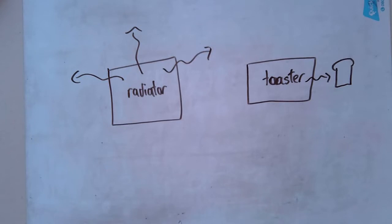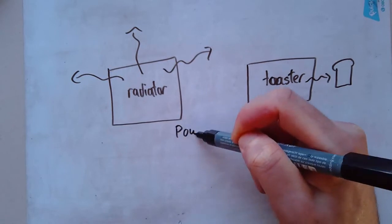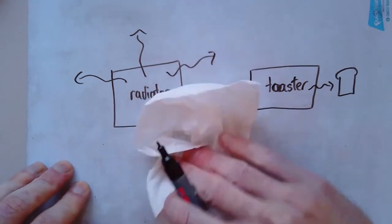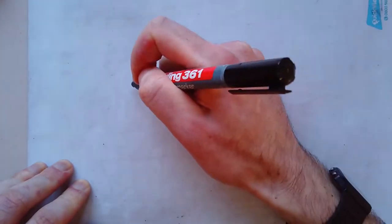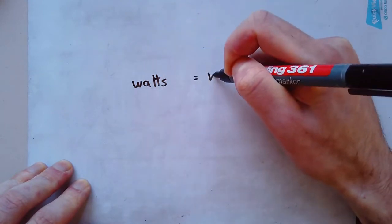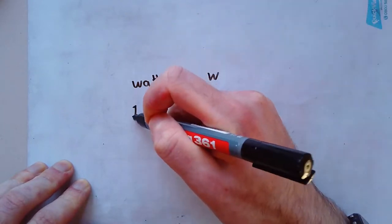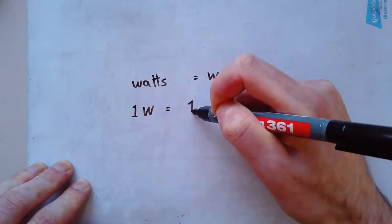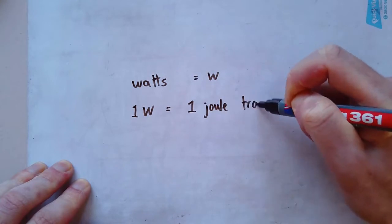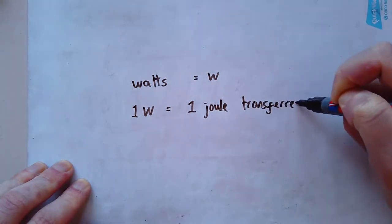We call this the power of a device. Now, in physics, power has a very specific meaning. And it's about how quickly a device transfers energy. We measure that power in a unit called a watt or in watts. And that's a capital W. One watt means one joule is transferred every second.